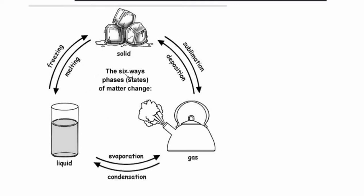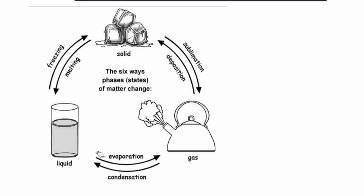Let's look at them one by one. Liquid water that turns into solid ice — this process is called freezing. From solid ice, if it is turned directly into a gaseous state, we call this sublimation — so from solid to gas is sublimation. From gas, when it turns into liquid, we call this condensation. The opposite process, if the liquid directly turns into gas, we call this evaporation, or it can be boiling.